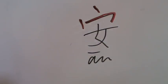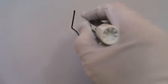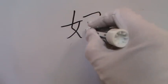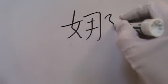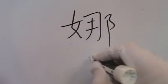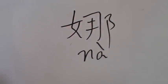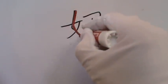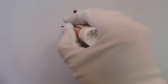And number four: 娜 (Na), written with 9 strokes. This character is used in female names, usually, like in Anna. And the radical is, of course, this one on the left.